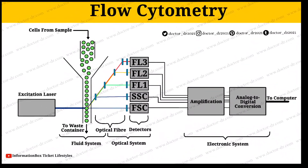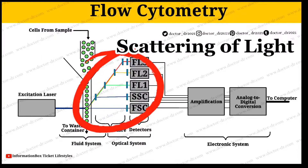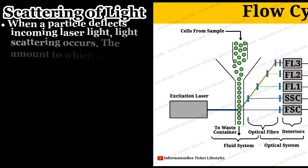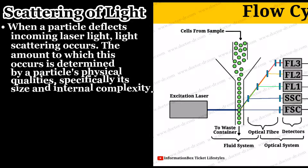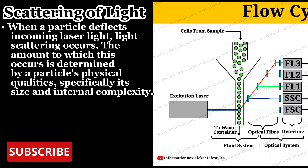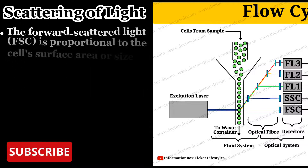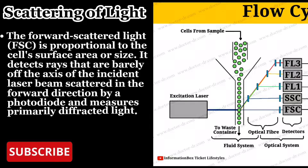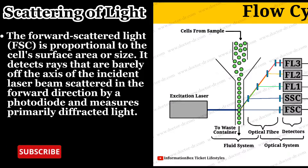Let's now briefly understand the process of scattering of light. When a particle deflects incoming laser light, light scattering occurs. The amount to which this occurs is determined by a particle's physical qualities, specifically its size and internal complexity. The forward scattered light (FSC) is proportional to the cell's surface area or size — it detects rays that are barely off the axis of the incident laser beam, scattered in the forward direction by a photodiode.